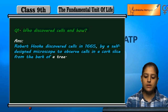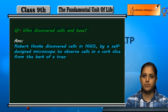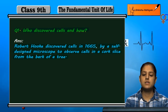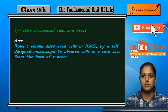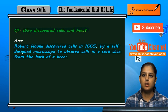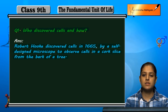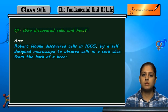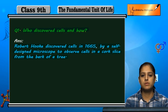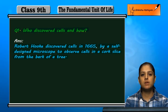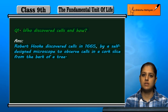Cork is obtained from the bark of a tree. Jab unhone is slice ko observe kiya under a self-designed microscope, unhone dekha ek pattern — ek aisi cheez dekhi aur usko unhone naam diya 'cells'. Ye sare compartment ki shape mein thay, egdam ek jaise thay. Jo bhi cheez thi wo egdam same thi har cell ki, to un compartments ko unhone naam diya 'cell'.